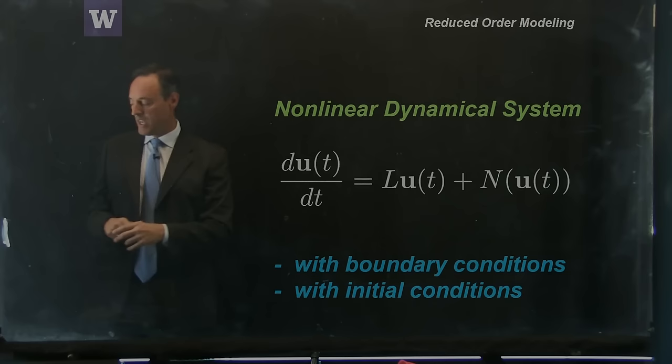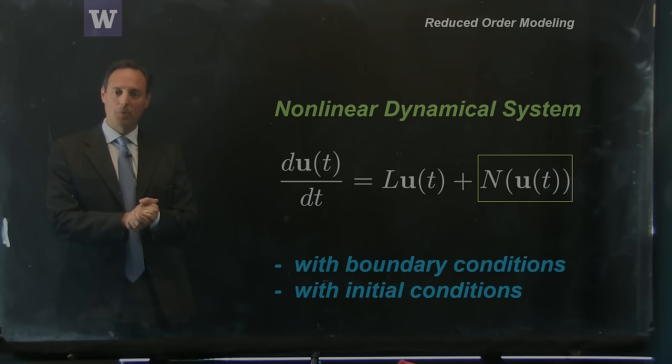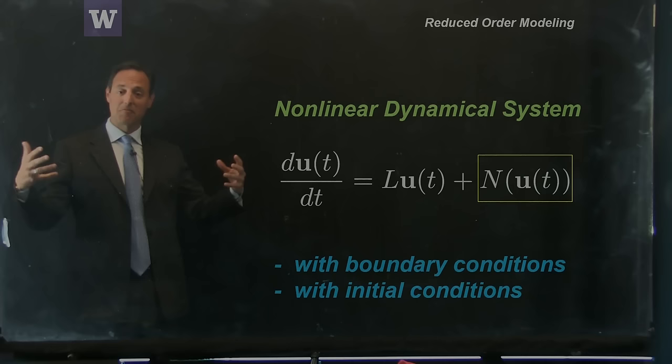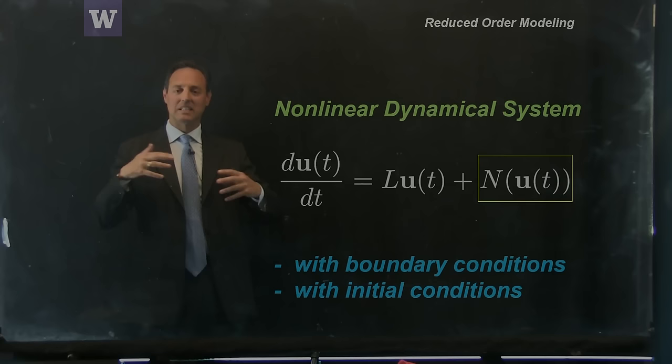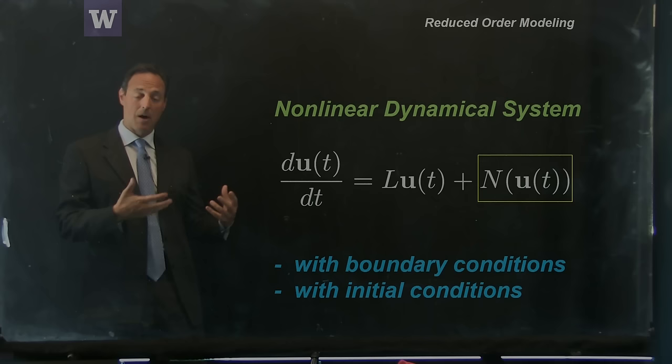The challenge ultimately comes down to that nonlinear term. If the system were linear, we would be in good shape — we could do quite a bit. But the nonlinearity is where all the complications arise, and also where all the interesting phenomena typically occur. A lot of what we're interested in modeling, all the interesting dynamics we see, is driven by that nonlinearity. On the other hand, it's that same nonlinearity that creates most of our computational challenge. How we handle the nonlinearity is going to be really important for making effective reduced order models.